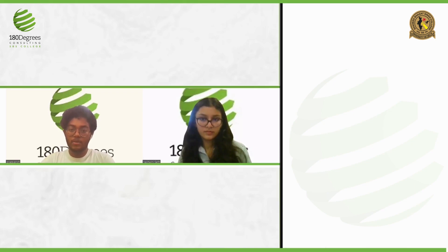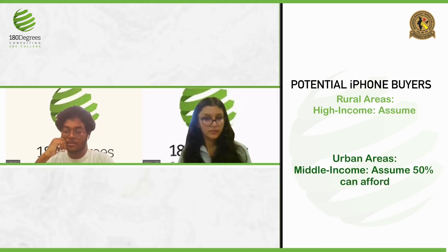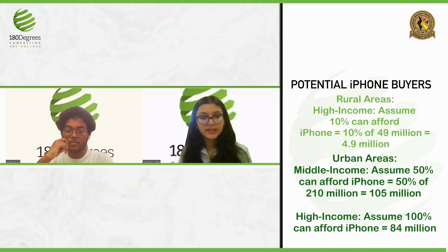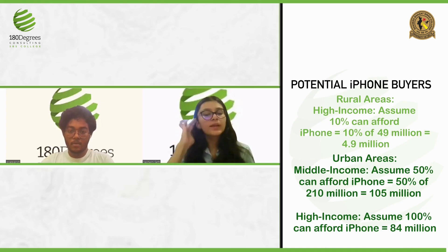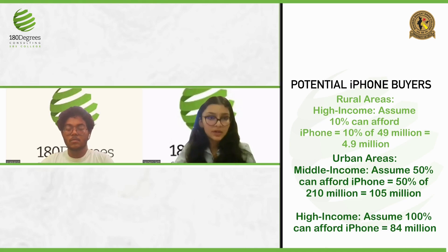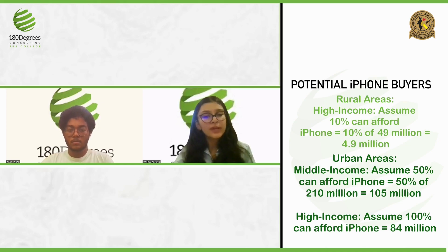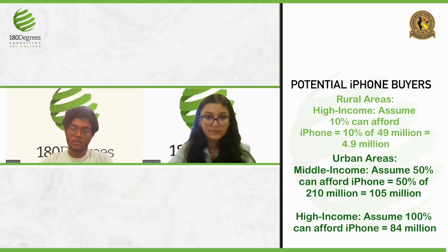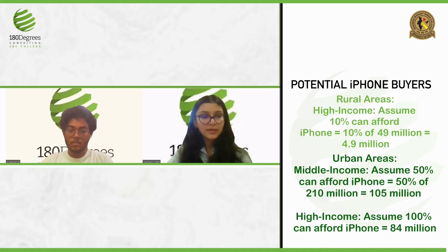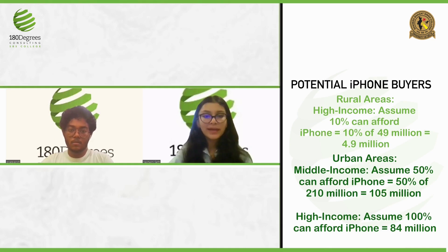Let's calculate the potential iPhone buyers. For rural areas, high income: assuming 10% of them can afford an iPhone, that is 10% of 49 million, which comes out to 4.9 million. For urban areas, assuming 50% of the middle income class can afford to buy an iPhone — 50% of 210 million — which is 105 million. For high income urban, assuming all of them can afford an iPhone, which is 84 million.